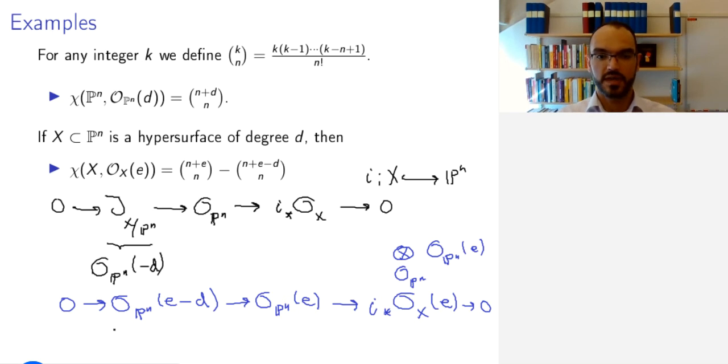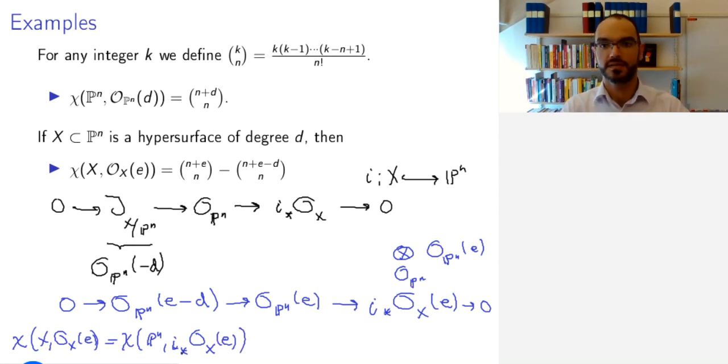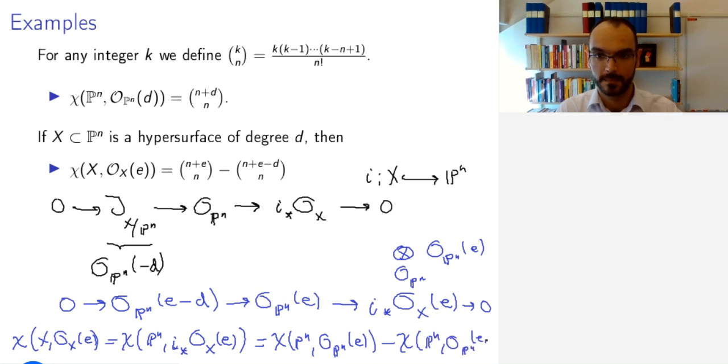So now I want to compute the Euler characteristic of X, O_X(e). Well, this is the same as the Euler characteristic of P^n of this push forward. Because as we have seen, the push forward doesn't change the cohomologies. And now by additivity of the Euler characteristic, this is the Euler characteristic of the middle term minus the Euler characteristic of the left-hand side. And this is exactly this difference.